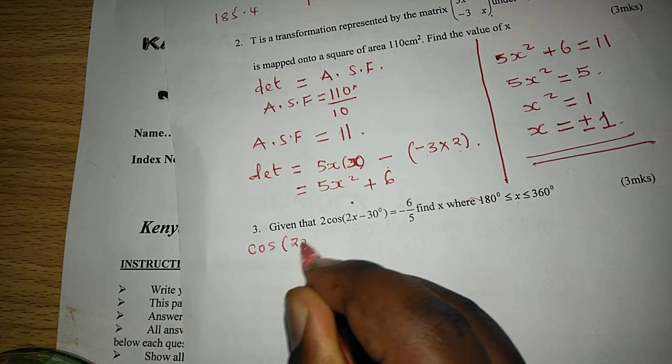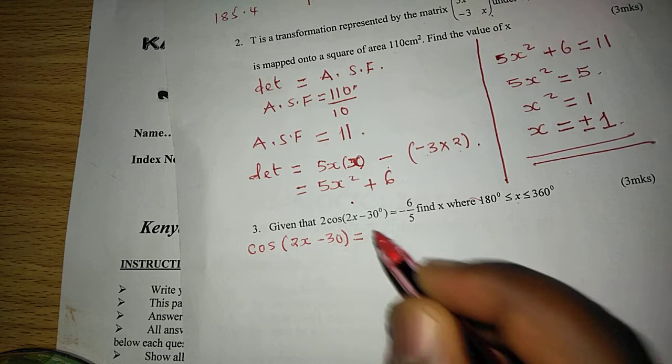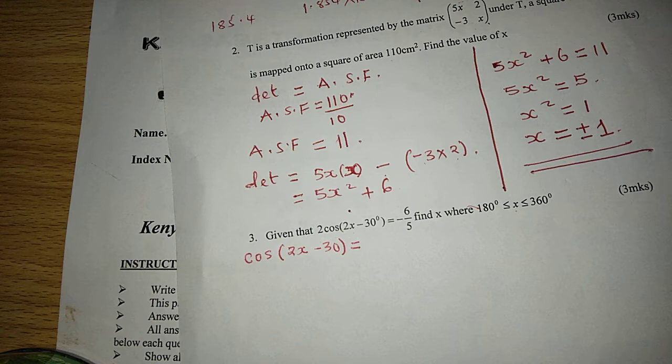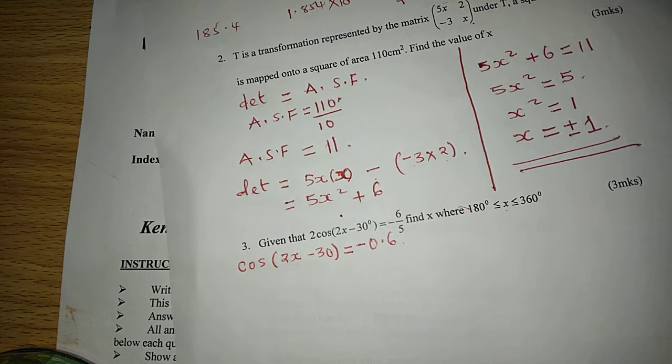So the first thing to do here, we first of all divide with the constant such that we have cosine of (2x minus 30 degrees) equals negative 6 over 5 divided by 2. And this gives us negative 0.6.